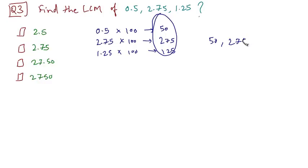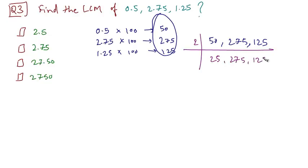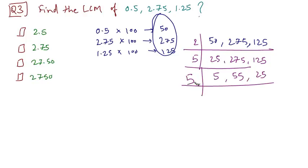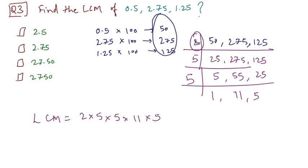We can write 50, 275, and 125. Let's first divide them by 2 — that gives 25; 275 and 125 cannot be divided by 2, so they remain as is. Then we divide by 5: 5 fives are 25, 5 into 55 is 275, and 5 into 25 is 125. Dividing again by 5: 5 ones are 5, 5 elevens are 55, 5 fives are 25. So LCM is equal to 2 into 5 into 5 into 5 into 11 into 5, which comes out to be 2750.